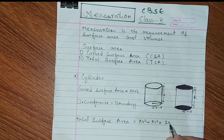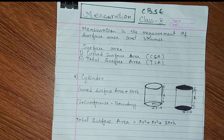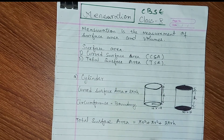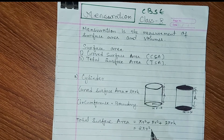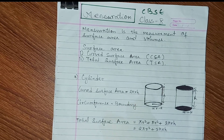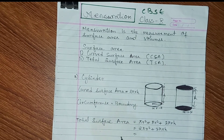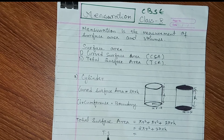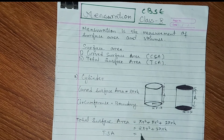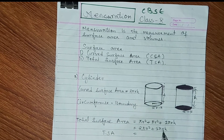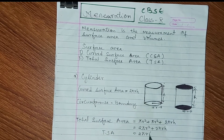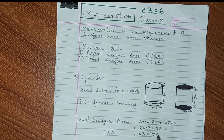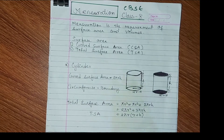So we add the curved surface area 2πrh and the base area πr² plus πr². Then 2πr is common, so: Total Surface Area = 2πr(r + h).